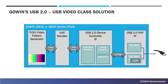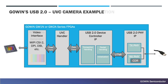Here we have a video pattern generator passed to a UVC, or USB Video Class, handler. This packages the data into packets to the USB 2.0 Device Controller IP and then transmits over the USB 2.0 PHY. This example uses a pattern generator to provide the video stream.